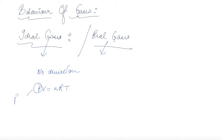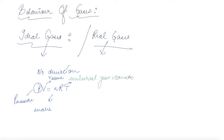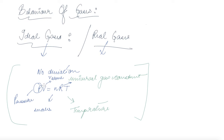In PV = nRT, P is pressure, V is volume, N is the number of moles present, R is the universal gas constant, and T is temperature. Under a given pressure and volume, the ideal gas behavior is constant.